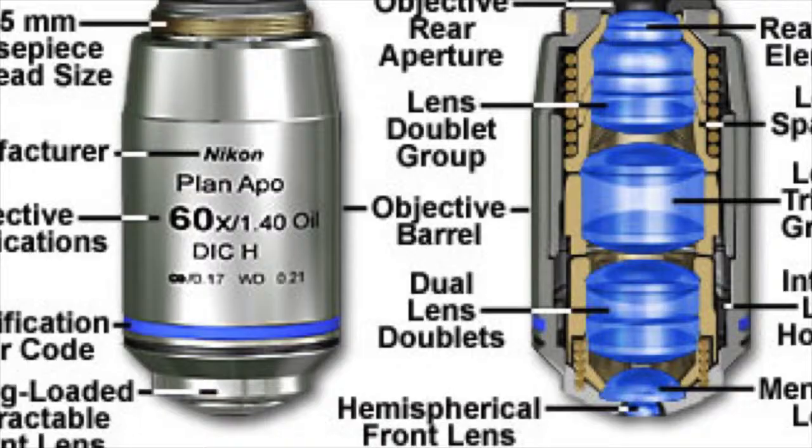In order to achieve the actual numerical aperture that's printed on the objective, your microscope must be perfectly aligned. The condenser has to be in the perfect vertical position — we're going to cover all this in detail. You cannot just throw a specimen on the microscope, throw the objective in the light path, and get that maximum numerical aperture if you're not doing all the required steps. So numerical aperture is very important.